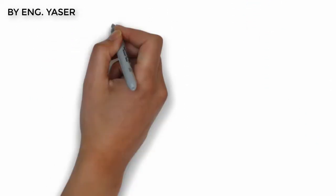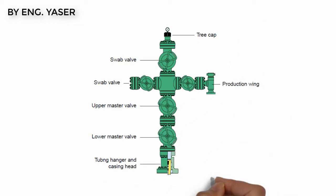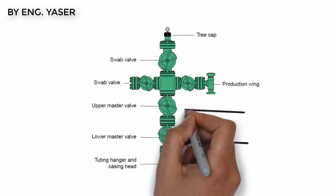The Christmas tree is an assembly of valves, spools, and fittings used to regulate the flow of pipes in an oil well, gas well, water injection well, water disposal well, and gas injection well.